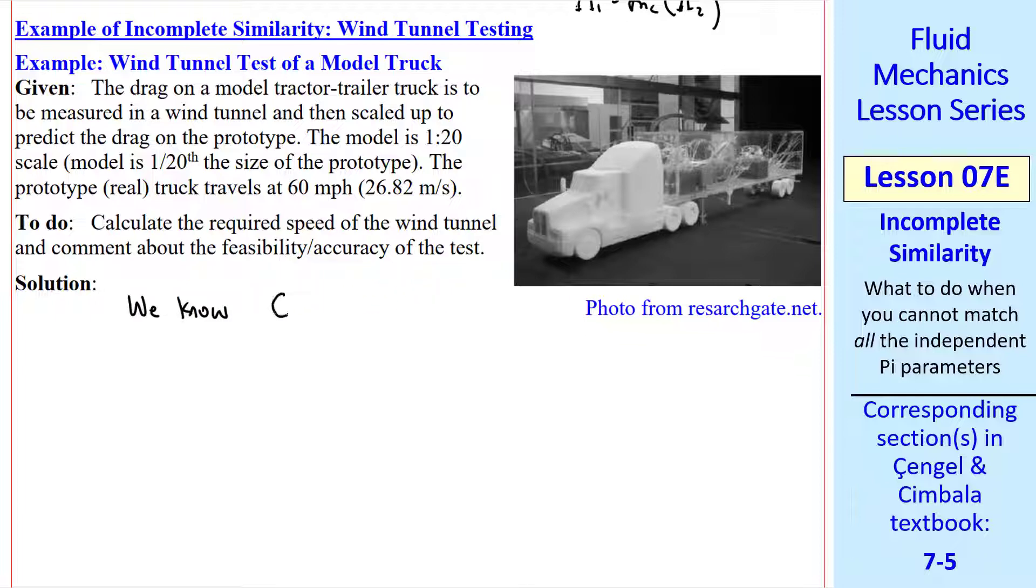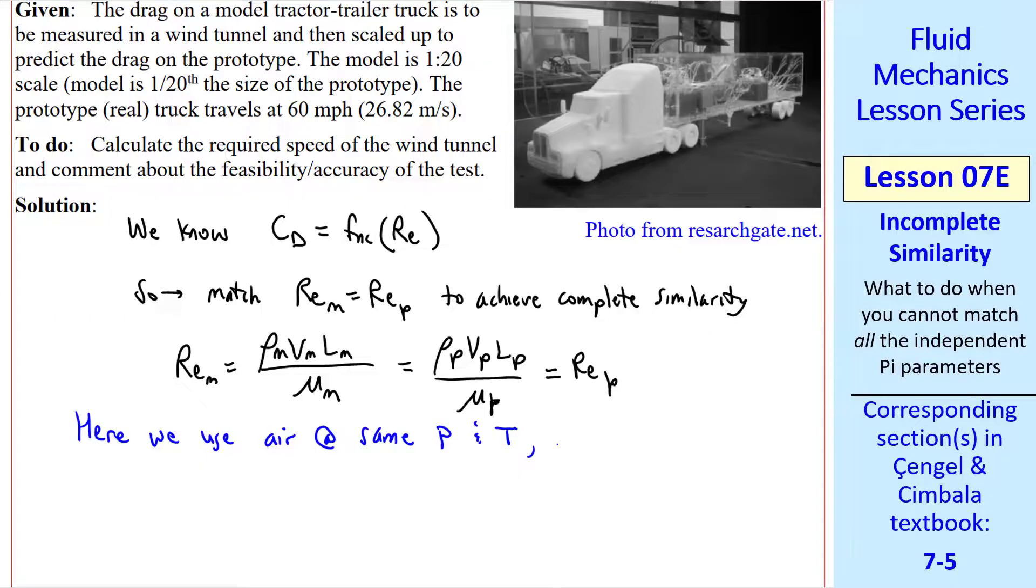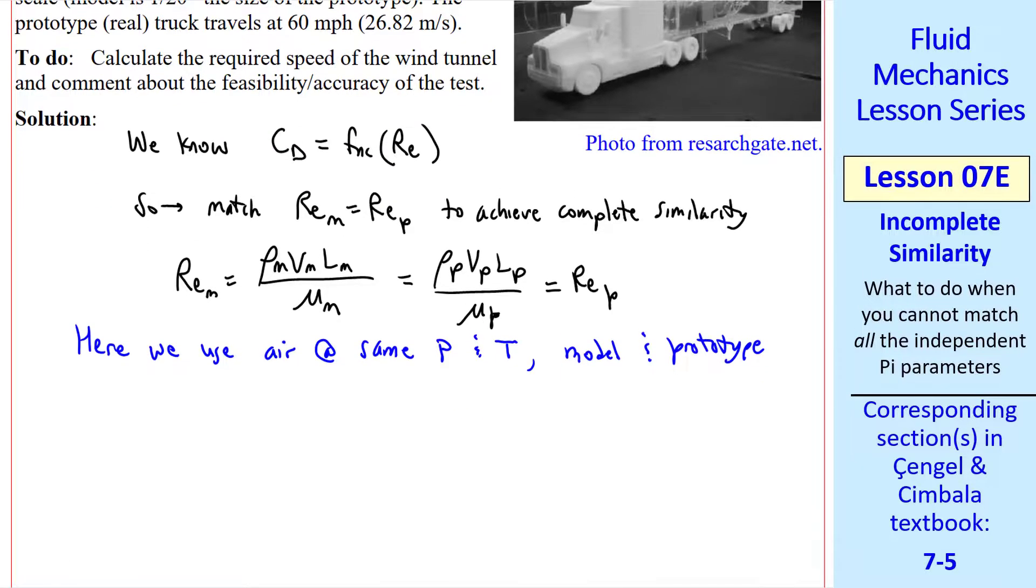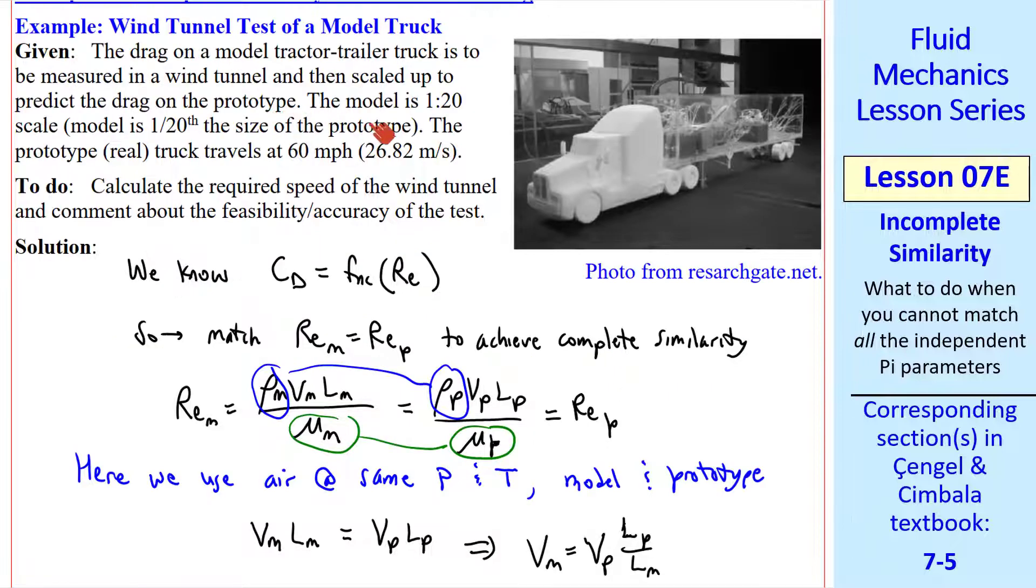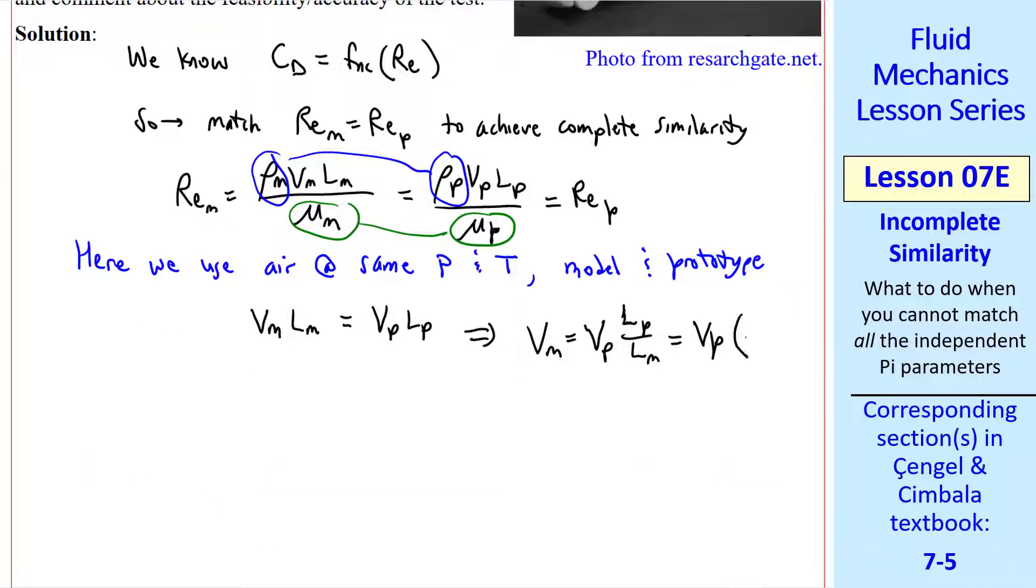Let's calculate the required speed of the wind tunnel. We know from a previous lesson that CD is a function of Reynolds number for this kind of problem. So we must match Reynolds number between model and prototype to achieve complete similarity. We write out the model Reynolds number and equate it to the prototype Reynolds number. Here we use air at the same pressure and temperature for model and prototype, so rho_m equals rho_p and mu_m equals mu_p. Our equation reduces to v_m*l_m = v_p*l_p, so v_m = v_p*l_p/l_m. Since the model is 1/20th the size of the prototype, v_m = v_p times 20.